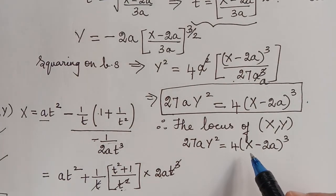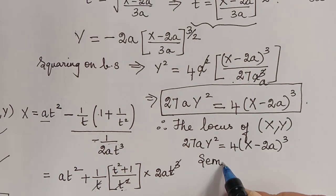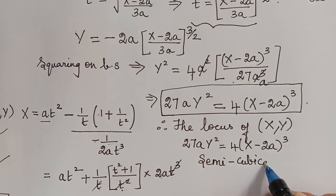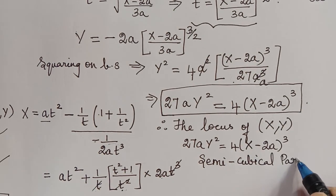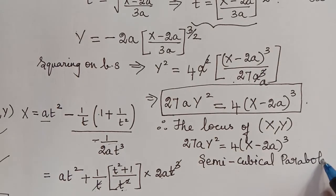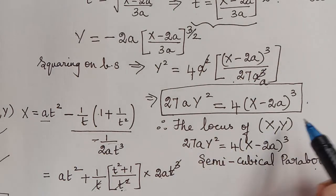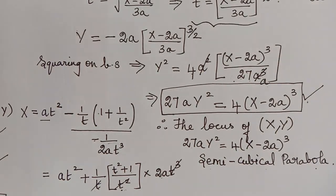So the evolute of the parabola y² = 4ax is the semicubical parabola given by 27ay² = 4(x - 2a)³. Hope you have understood the complete problem clearly. Thank you.